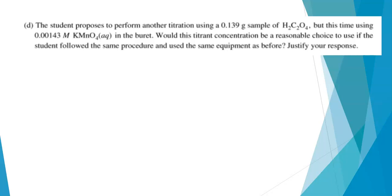And let's go on to the last part of this question. The student proposes to carry out another titration, again using a 0.139 gram sample of oxalic acid. But this time, the concentration of the potassium permanganate solution is considerably lower, 0.00143 molar. Would this be a reasonable choice for the titration if we're using the same procedure and the same equipment? That's a really important point here because that would be the same buret. Justify your response. So you need to use math-based reasoning for your answer.